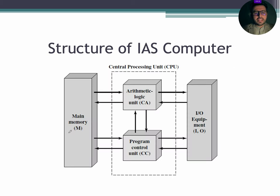IAS computer consists of four major components: a main memory for storing both data and instructions; an arithmetic logic unit for performing arithmetic and logic operations on binary data; a program controlled unit for interpreting the instructions and facilitating their execution; and input output equipment operated by the control unit.